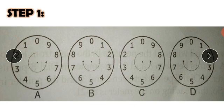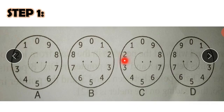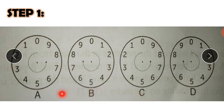The pointer on dial D must complete one full revolution from zero back to zero before the pointer on dial C moves to one. After each revolution of dial D, pointer C advances by one. After a full rotation of dial C, dial B moves to one. The sequence goes from dial D to C, then B, then A. The same procedure applies between dials B and C, and dials A and B.